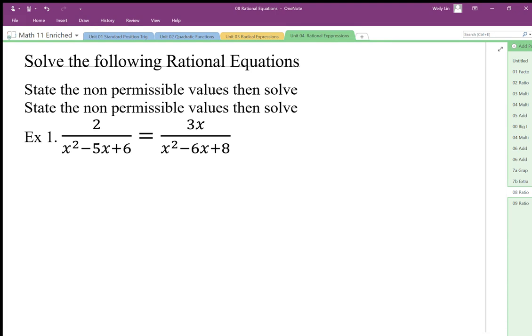Now to state the non-permissible values we're only looking in the denominator and we need the factors because anytime that we have a factor of zero we're going to end up with a zero in the denominator. So our first step then is going to be to factor.